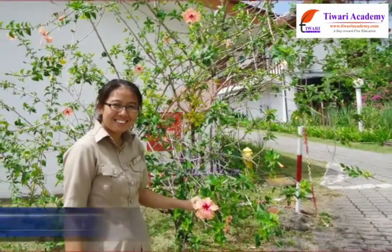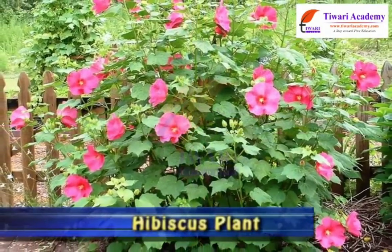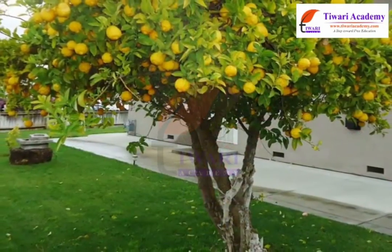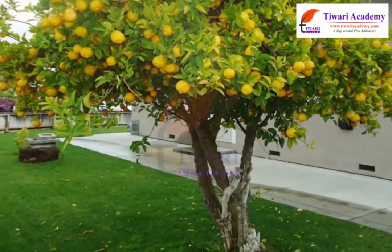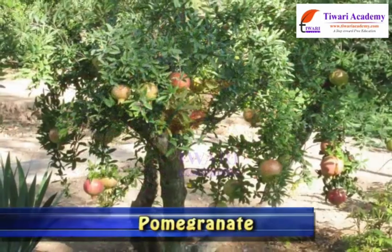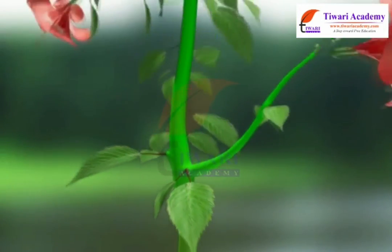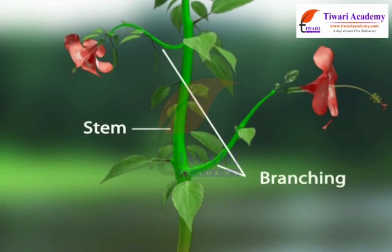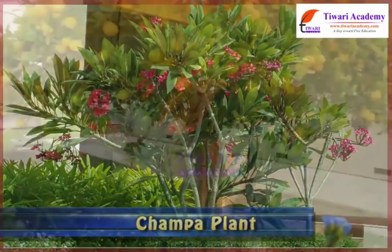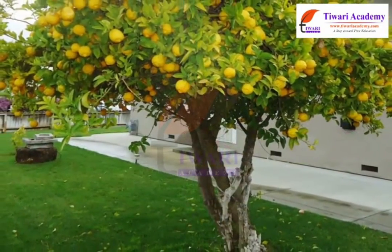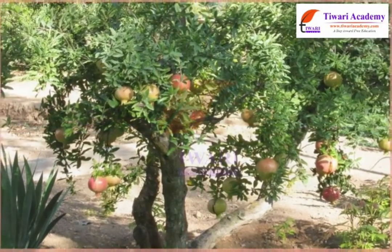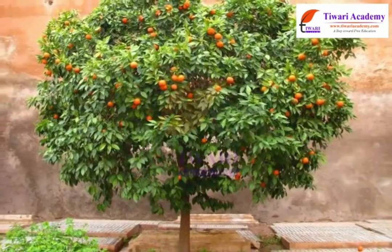Shrubs are plants of medium height. Examples include hibiscus, rose, and champa. Shrubs have green, slightly thick and hard stems. Examples are lemon, orange, pomegranate, etc. Usually, shrubs branch at the base of the stem. So, shrubs are plants of medium height, with branching starting at the base and stems that are hard but not very thick.